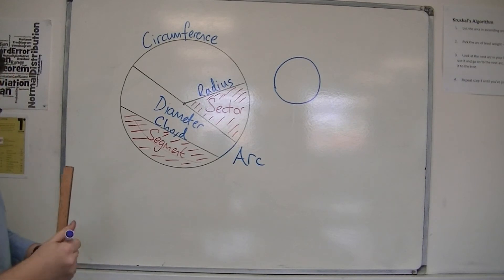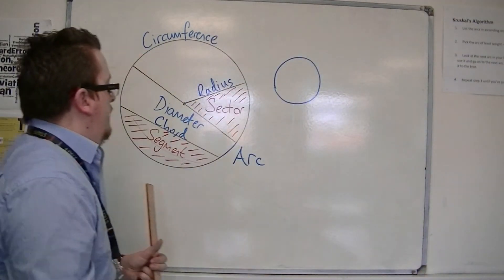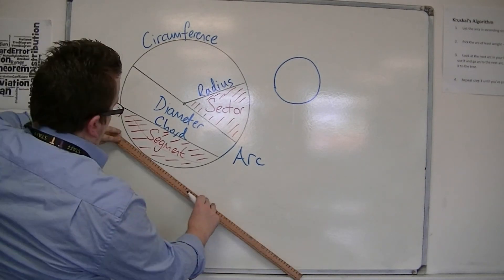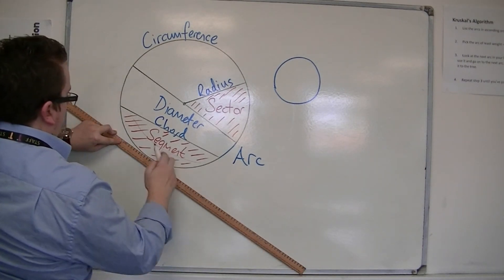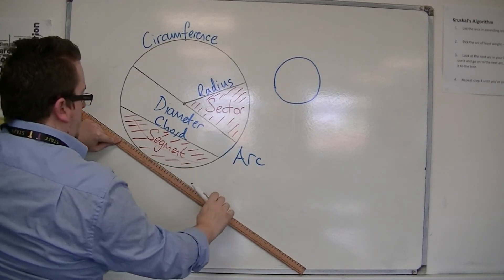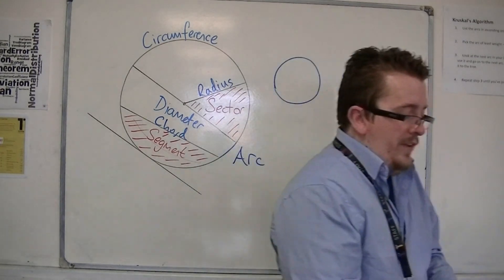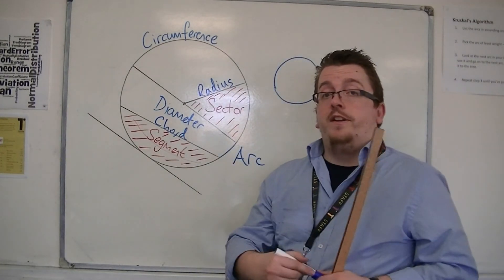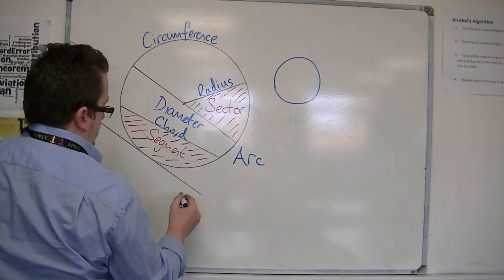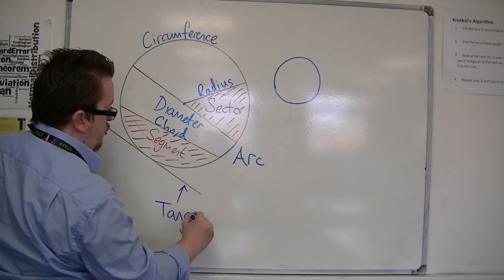And last but not least, another line that we look at just touches the circle at one particular point. And this is known as a tangent line. A tangent to the circle.